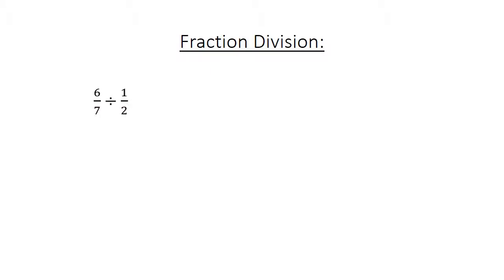Fraction division. 6 over 7 divided by 1 over 2 equals 6 over 7 times 2 over 1 equals 12 over 7 equals 1 and 5 over 7.